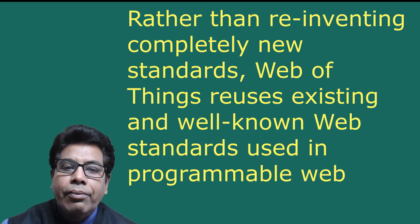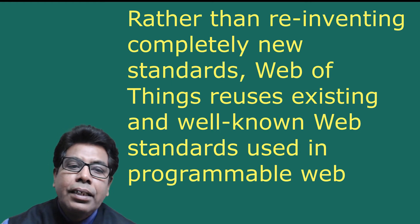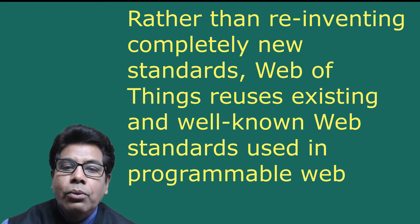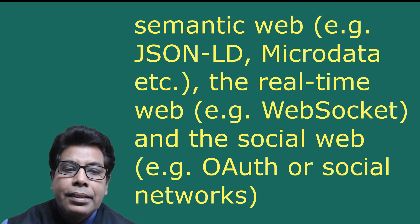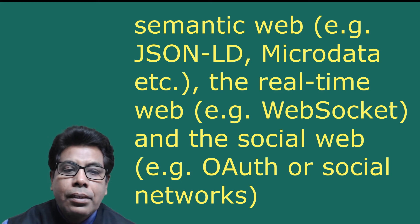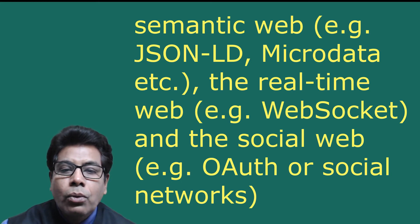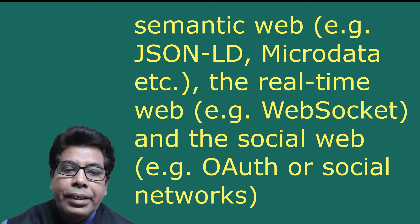Rather than reinventing completely new standards, web of things reuses existing and well-known web standards used in programming the web. For example, REST, HTTP, and JSON. For the semantic web, standards such as JSON-LD and Microdata are used. For the real-time web, WebSockets are used. And for the social web, OAuth and social networks are used.